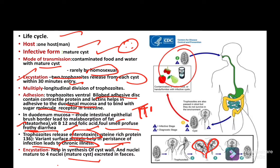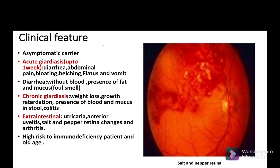When a person takes contaminated water containing cysts, it passes into the duodenum, excystation occurs, and then quadrinucleated cysts are released in the stool along with the presence of steatorrhea.